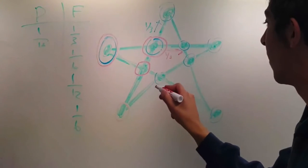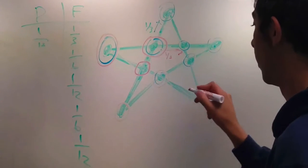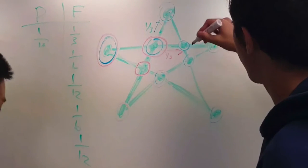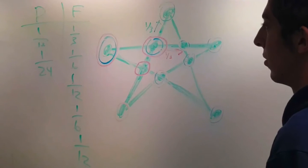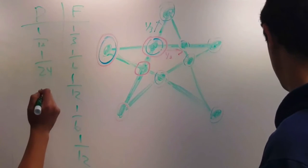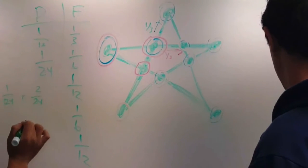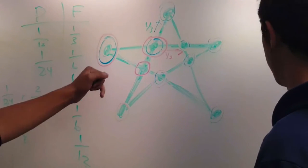And then we can go here and then it's the same thing: one half, one half, one half. One half to get here and then another one half to get here and then it's guaranteed to solve. So 2 over 24, 1 over 24 plus 2 over 24 is one eighth. So one eighth chance of success here.